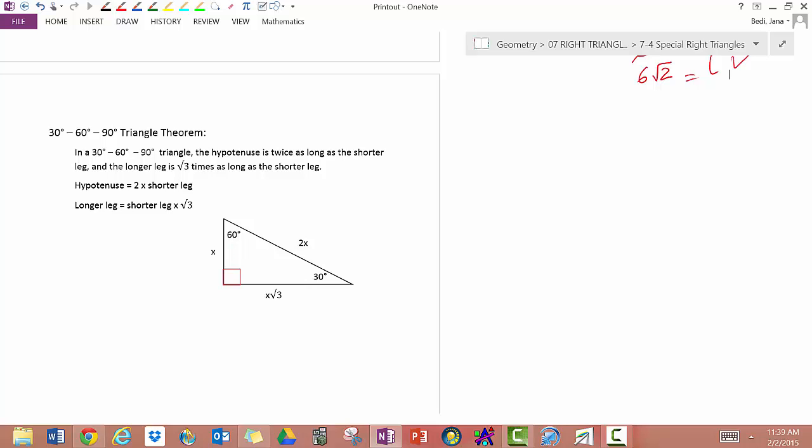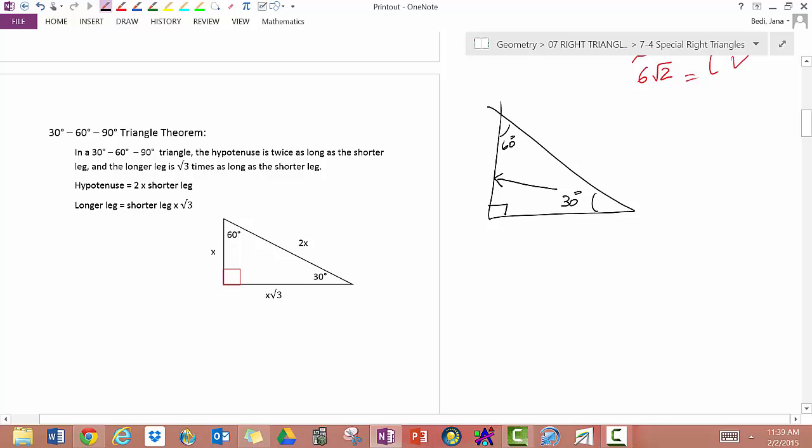In a 30-60-90 triangle, life gets a little more interesting. And here's what happens. Now, I'm not going to prove that for you using Pythagorean theorem. But you can use numbers to figure it out. The shortest side in a triangle is opposite the smallest angle. In a 30-60-90 triangle, 30 degrees is the smallest angle. So, the smallest side is x, opposite 30 degrees.